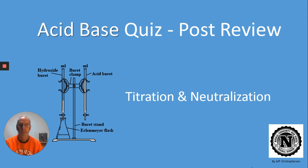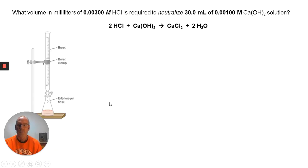I went through and made some PowerPoints for a few of the questions that were on the test. I hope if you take the time to go through this, it'll make a lot more sense to you. So we're dealing with burettes and titration. Here was a question: what volume in milliliters of 0.003 M HCl is required to neutralize 30 mL of 0.0100 M calcium hydroxide? I gave you the balanced chemical equation.